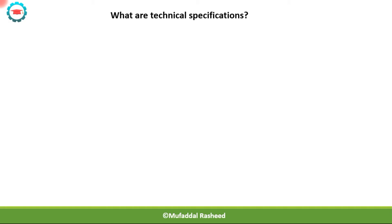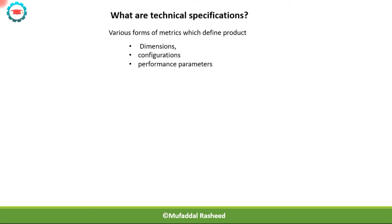Now we will talk about specifications. Developing vehicle specifications is an important step in concept development because they define the vehicle for what it is. There can be various forms of metrics which define the product — they can be in the form of dimensions, configurations, or performance parameters. The vehicle and its features are defined by the specifications.